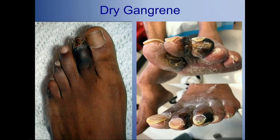Dry gangrene is a common thing that we see in our clinics. It's not a medical emergency. This is a dry, stable wound that generally can undergo revascularization first before any management is done. Some patients, for one reason or another, are not surgical candidates or are not optimal, and they may have a gangrenous toe for several months or longer. We may allow that to auto-amputate. In some cases, however, procedures have to be done to manage that necrotic tissue.